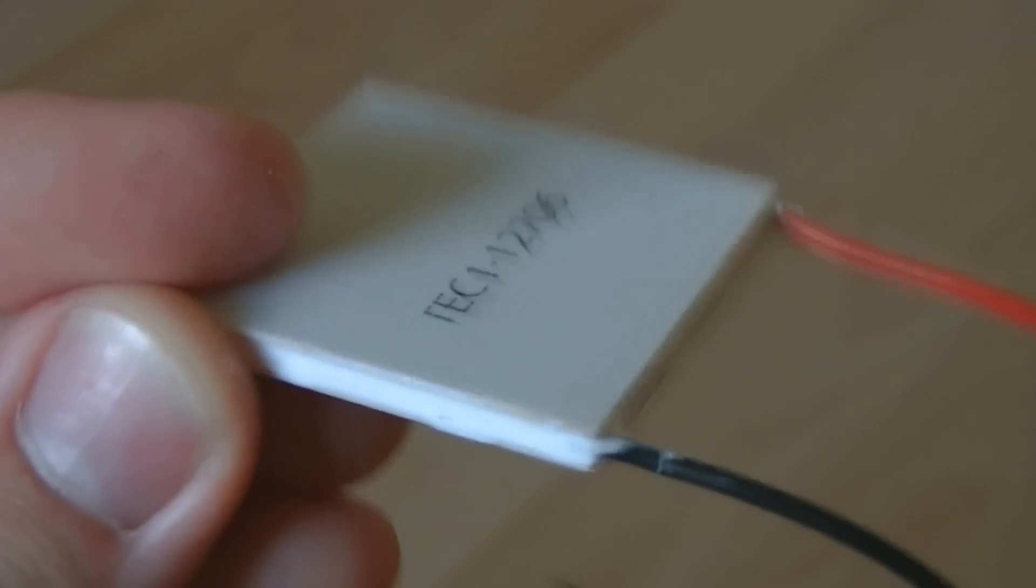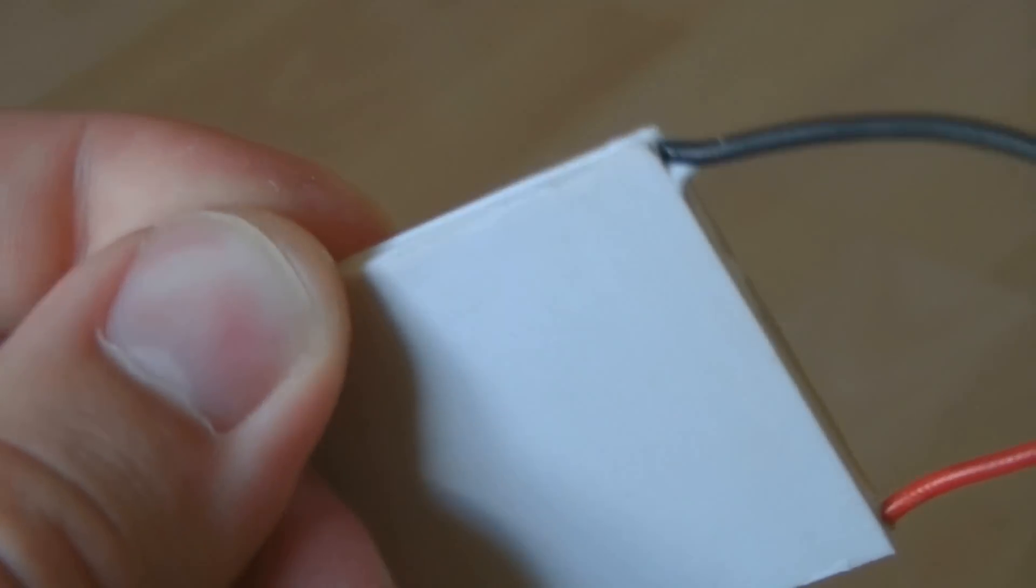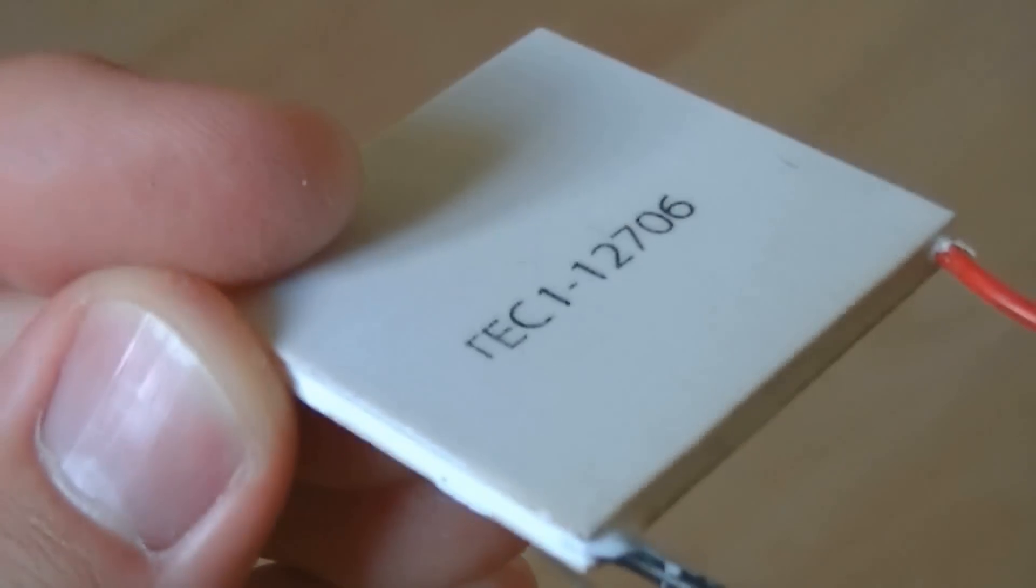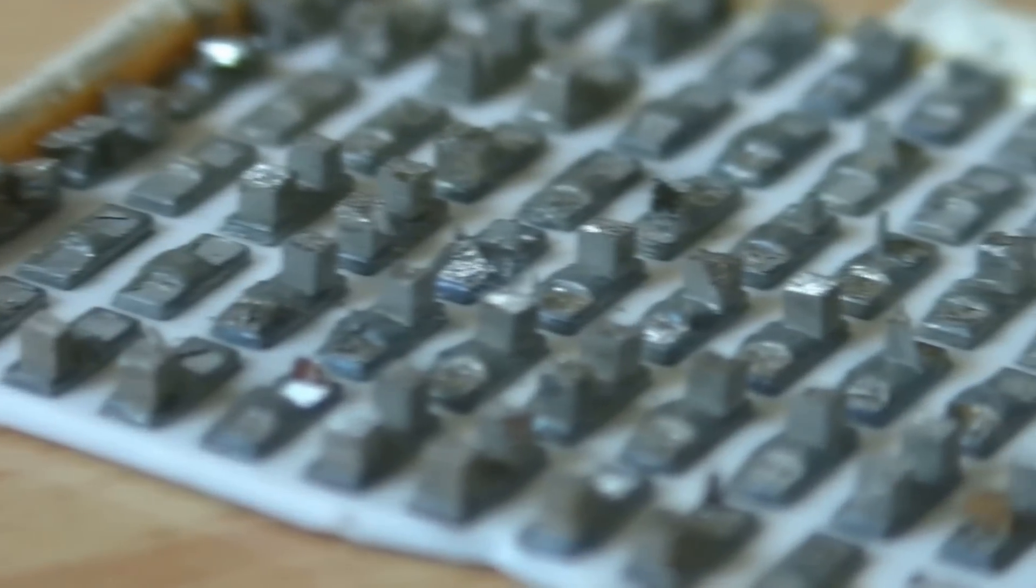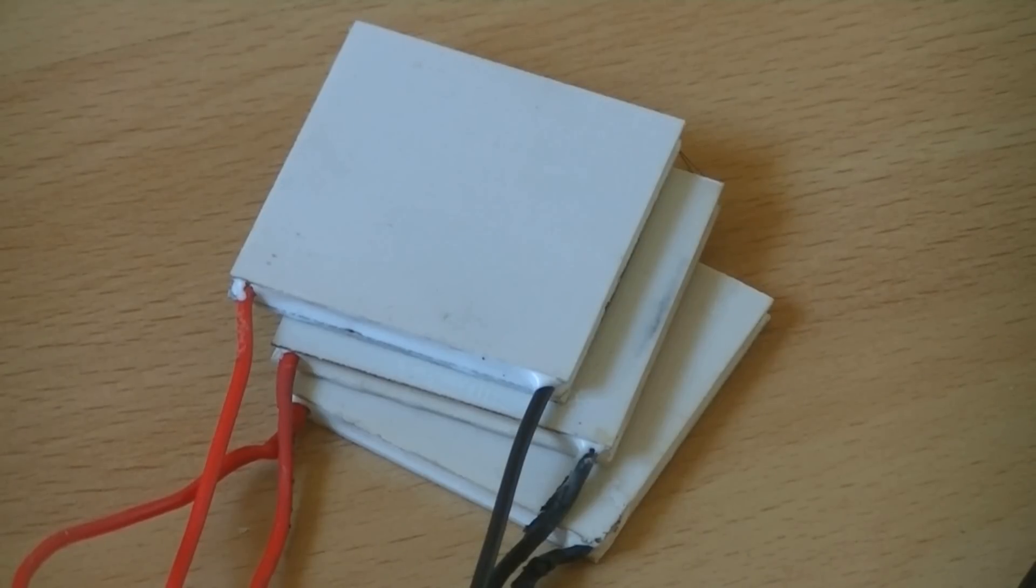Fortunately, we can do much better than that thanks to manufactured goods, which gather many junctions with specific metals. They are called Peltier modules. They can almost only be found in car electric coolers. They are used to produce cold from an electric current. But, of course, they are reversible. We bought a few of those on eBay for about $13.